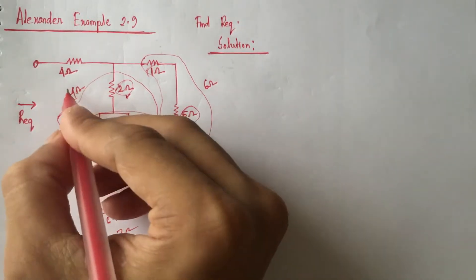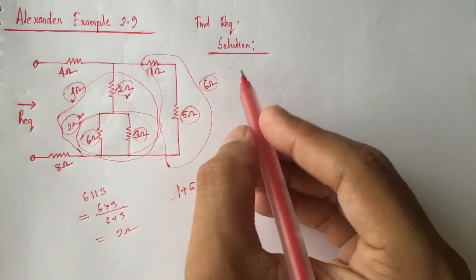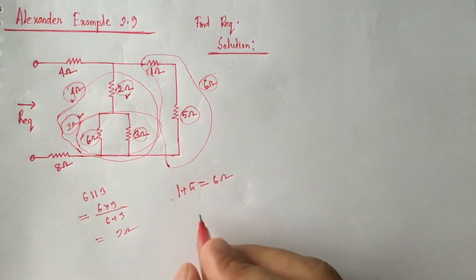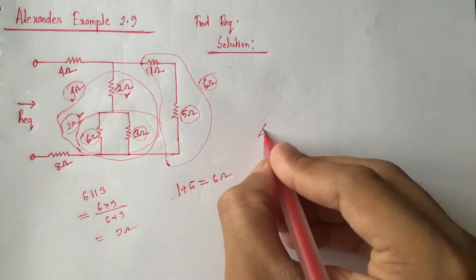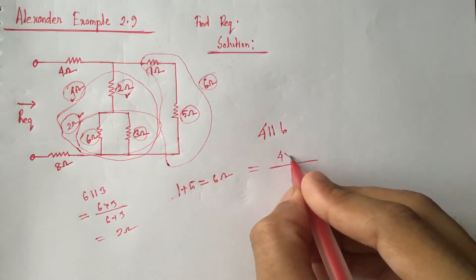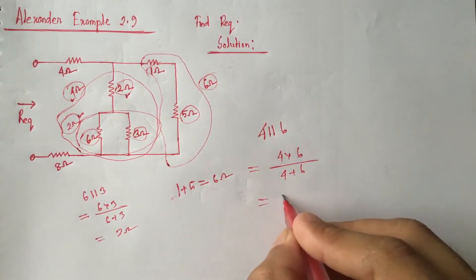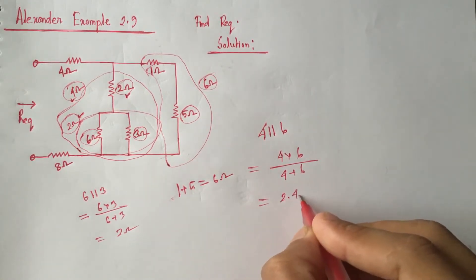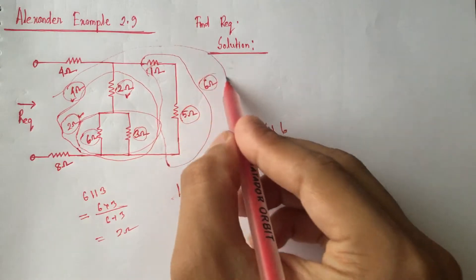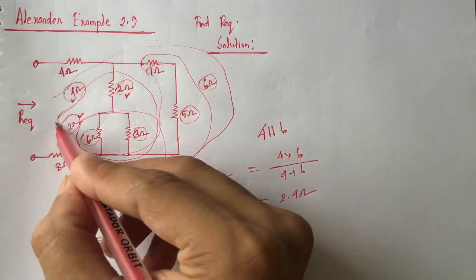Now we see that this 4 ohm resistance and this 6 ohm resistance are in parallel. So the 4 ohm and 6 ohm parallel combination can be replaced by an equivalent resistance of 2.4 ohm.